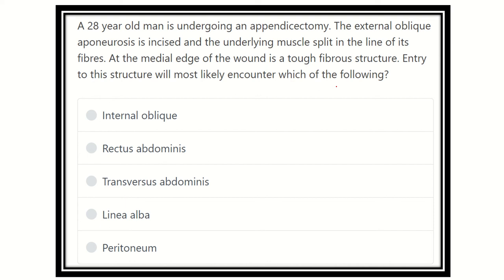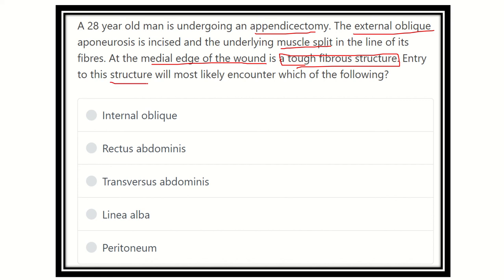In this question, we have to find the key points for answering. A 28-year-old man is undergoing an appendectomy. The external oblique muscle is incised, then the underlying muscle is split — and we know the muscle underlying the external oblique is the internal oblique muscle. The medial edge of the wound is a tough fibrous structure. The options are: internal oblique, rectus abdominis muscle, transversus abdominis muscle, linea alba, and peritoneum.